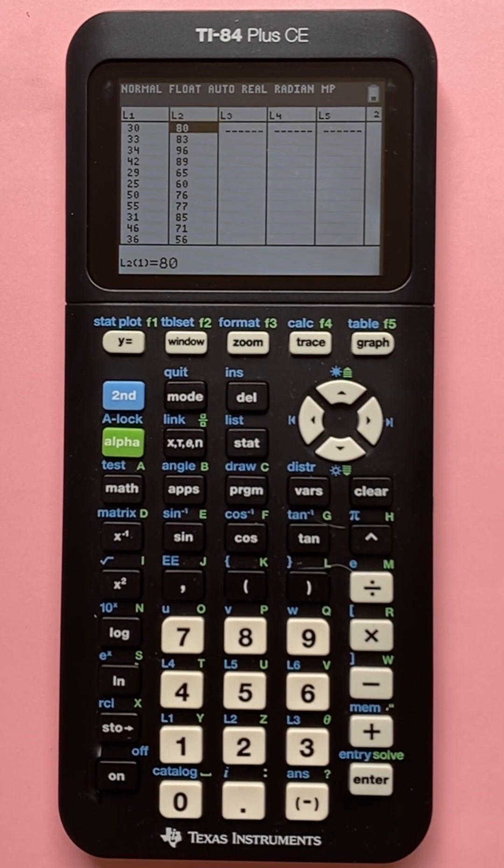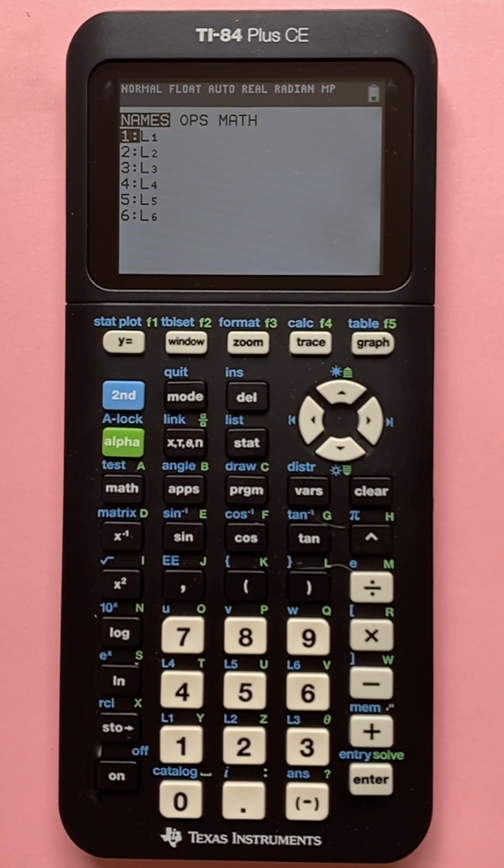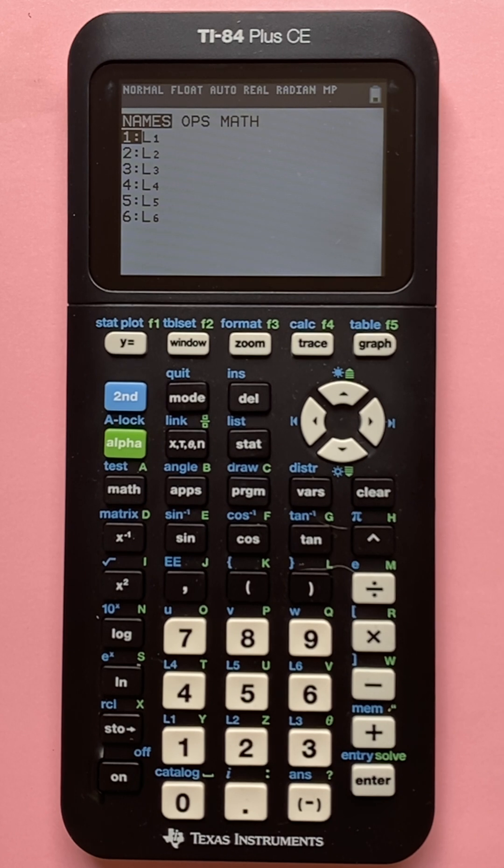Here I've got my stat, edit, and I've got two sets of data in there. Notice also if I hit second list, I've got all the lists of data that I have right there.